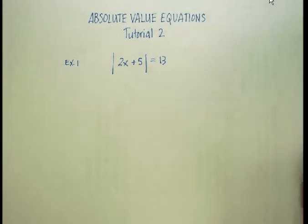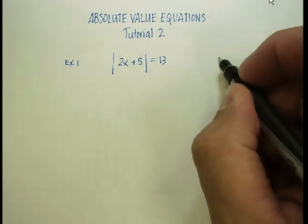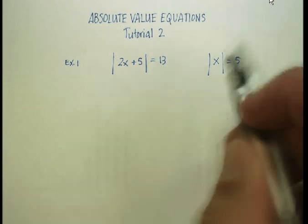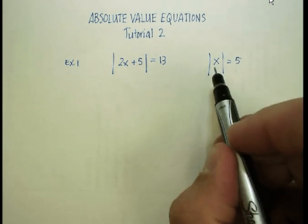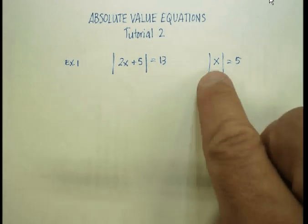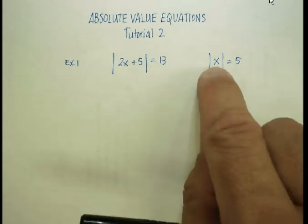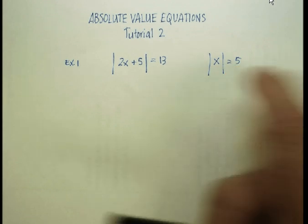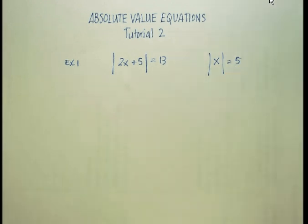Okay, so our tutorial number one, what was it briefly? I said the absolute value is defined as the distance away from zero on a number line. So what this is saying is I want you to find an x that is five units away from zero on a number line.